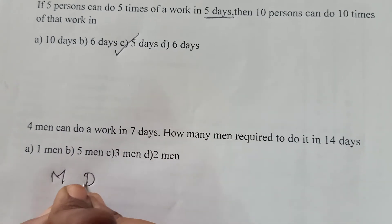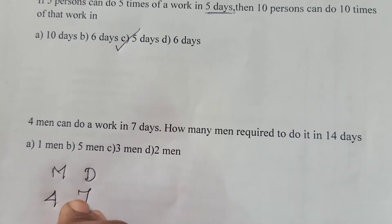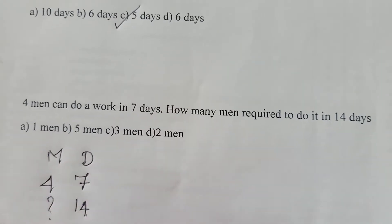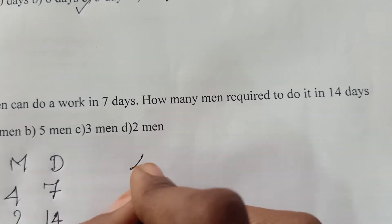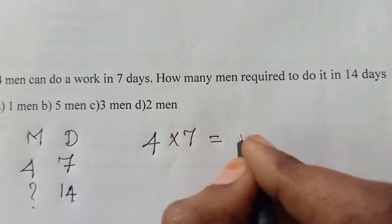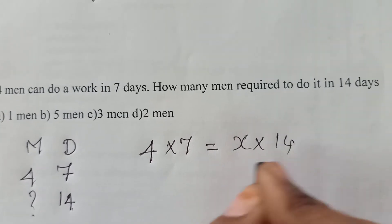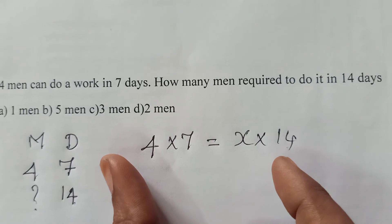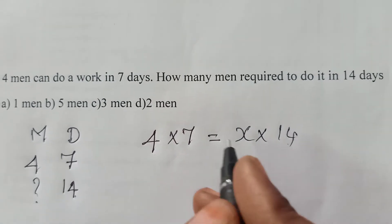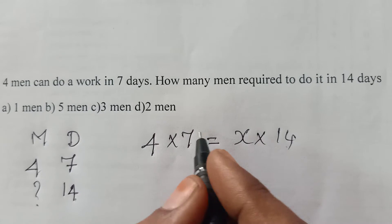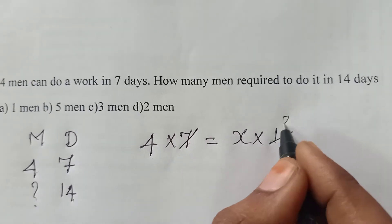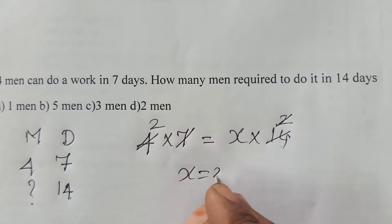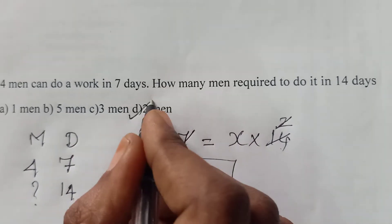In this question they have given only man and days. 4 men they are working for 7 days. So they have given 14 days. My question, how many men are required? So 4 into 7 equals x into 14, which is M1 D1 and M2 D2. When we cancel, if we have numerator alone we can cancel directly. We don't want to come to that side and this side. In 7 table, 14 is 2 times. In 2 table, 4 is 2 times. So the value of x will be 2 men. For this question, the answer is 2 men.